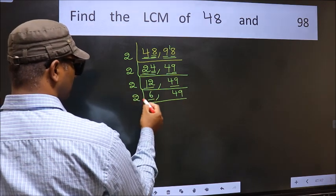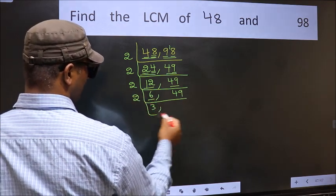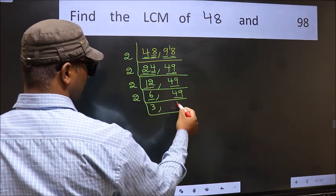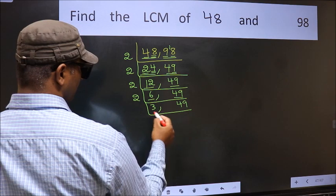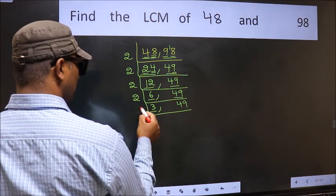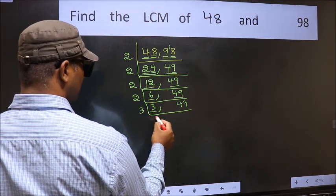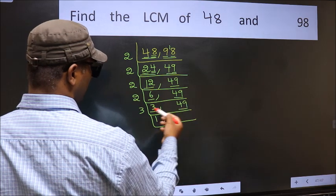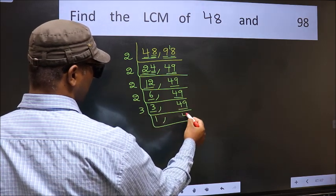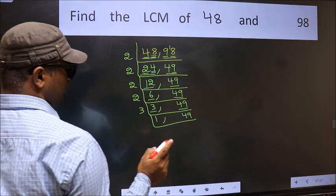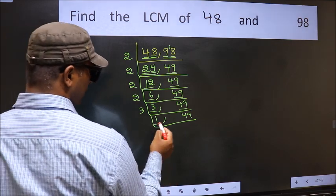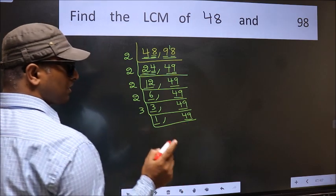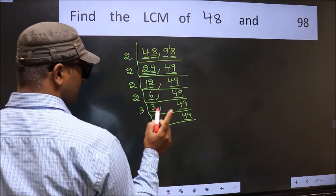Now we have 6. 2 threes are 6. The other number 49 is not divisible by 2, so we write it down as it is. Now we got 1 here, so focus on the other number 49. Always remember: 7 times 7 is 49.